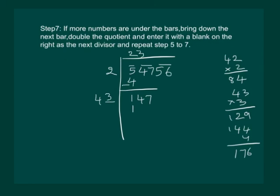We get 129. Let us subtract. We get 18. So we are left with a number now, and more numbers are there in the bar. So let us bring down 56.